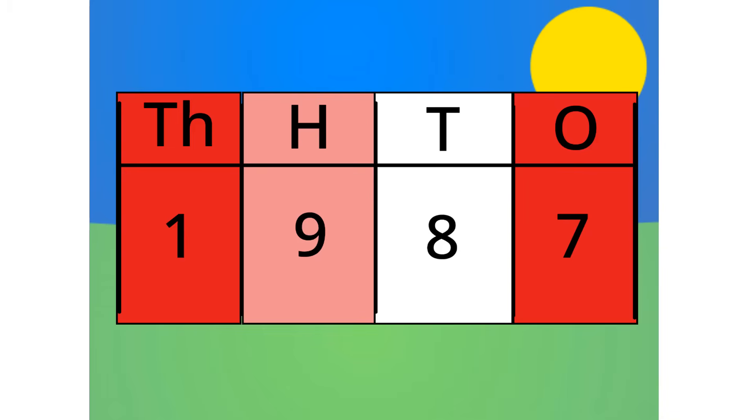This number is made up of one thousand, nine hundreds, eight tens, and seven ones. See?